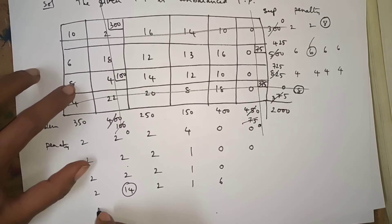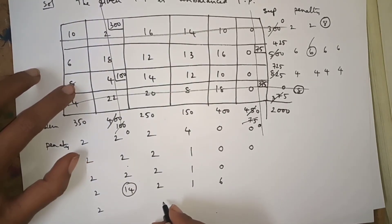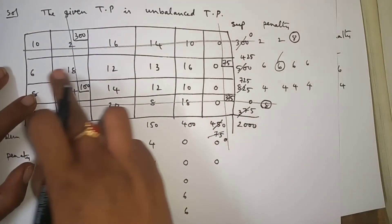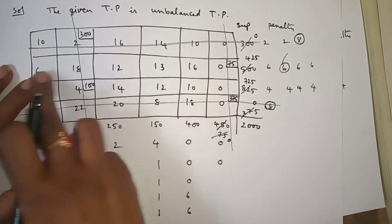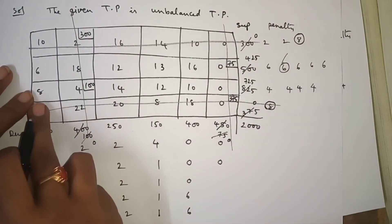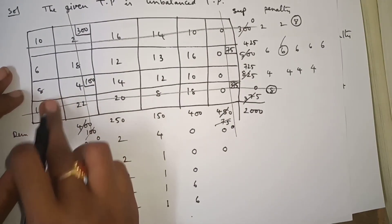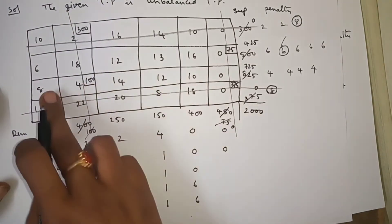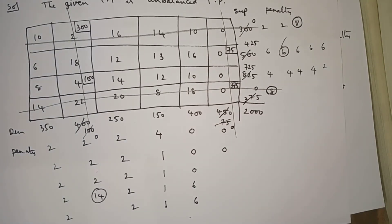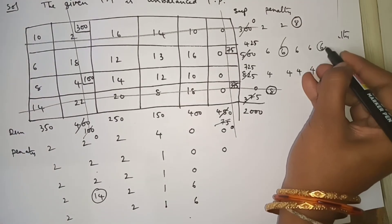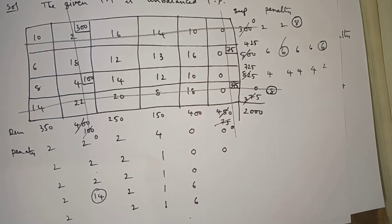Fifth iteration penalties: first column 6 minus 8 is 2; 14 minus 12 is 2; 13 minus 12 is 1; 16 minus 10 is 6. Row penalties: second row 6 and 12 gives 6; third row 10 and 8 gives 2. Highest penalty is 6, occurring 2 times. You can take any one — I will take the second row.